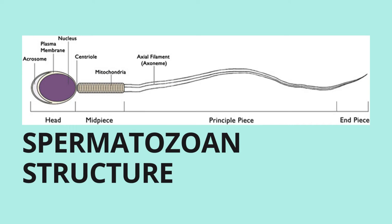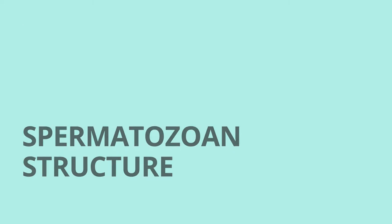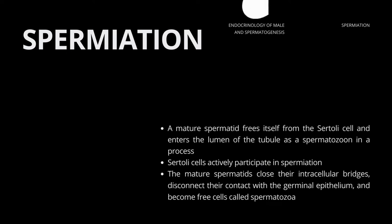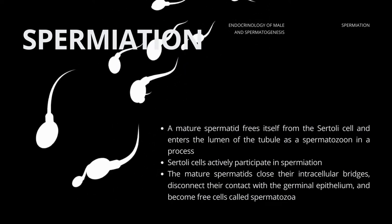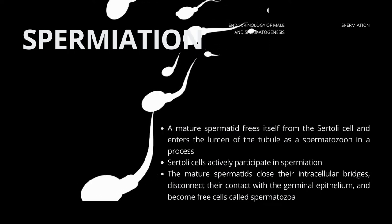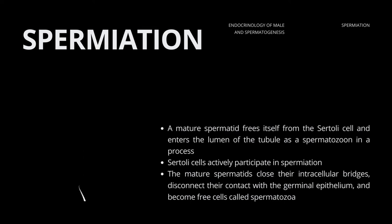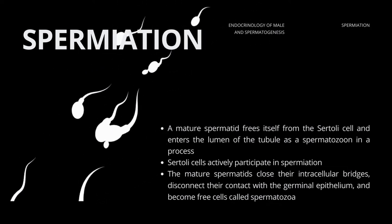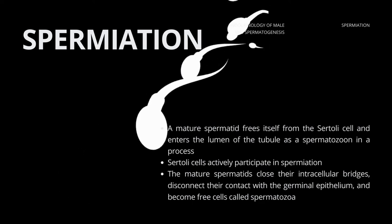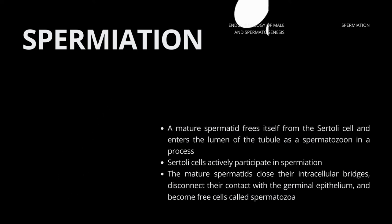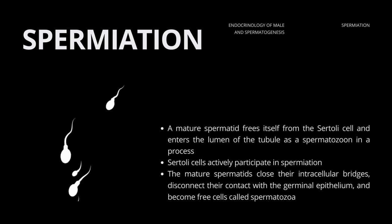This figure shows the anatomy of a spermatozoon, which consists of the head, mid piece, principal piece, and end piece. The acrosome, plasma membrane, and nucleus are located in the head; the centriole and mitochondria in the mid piece; and the axial filament or axoneme in the principal piece. A mature spermatid frees itself from the Sertoli cell and enters the lumen of the tubule as a spermatozoon in a process called spermiation. Sertoli cells actively participate in spermiation. The sperms then spend a few days in the epididymis and gain motility, becoming capable of fertilization. The mature spermatids close their intracellular bridges, disconnect from the germinal epithelium, and become free cells called spermatozoa.